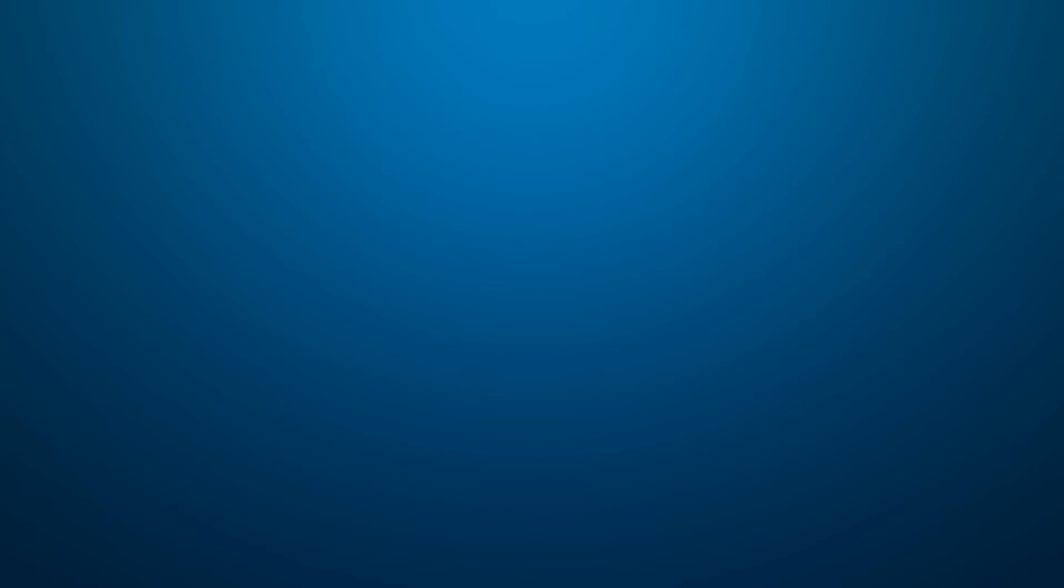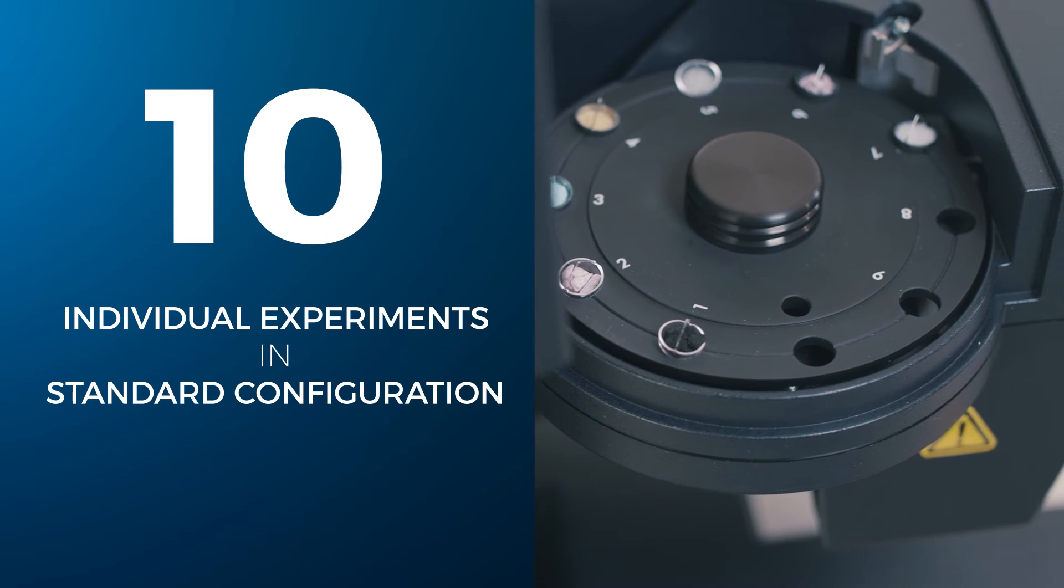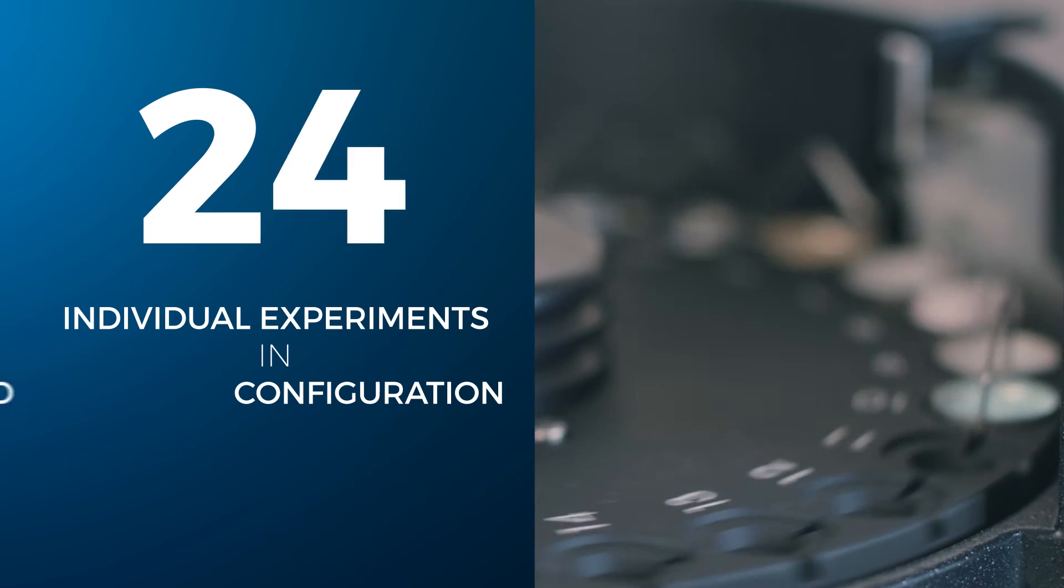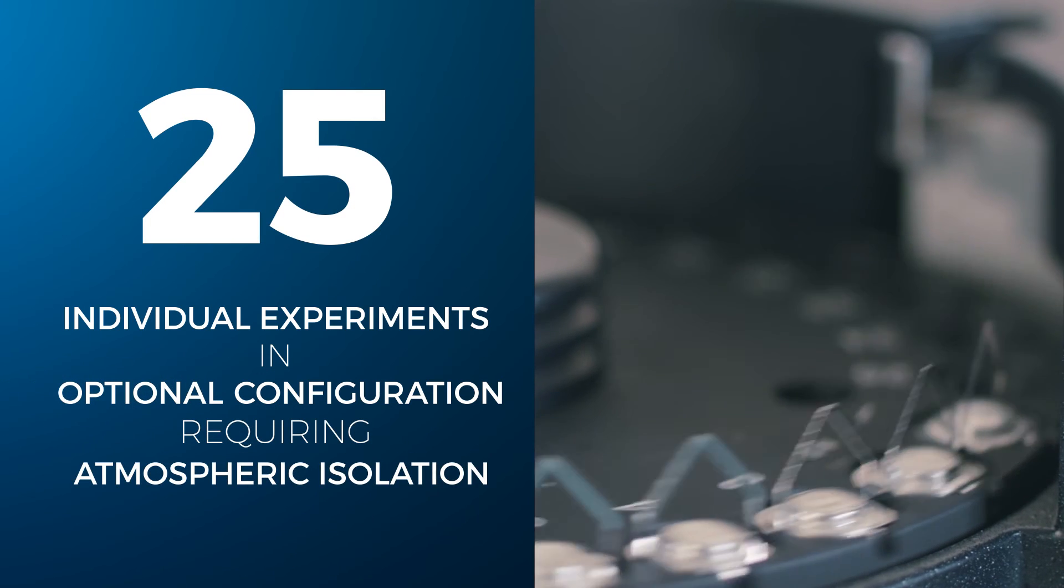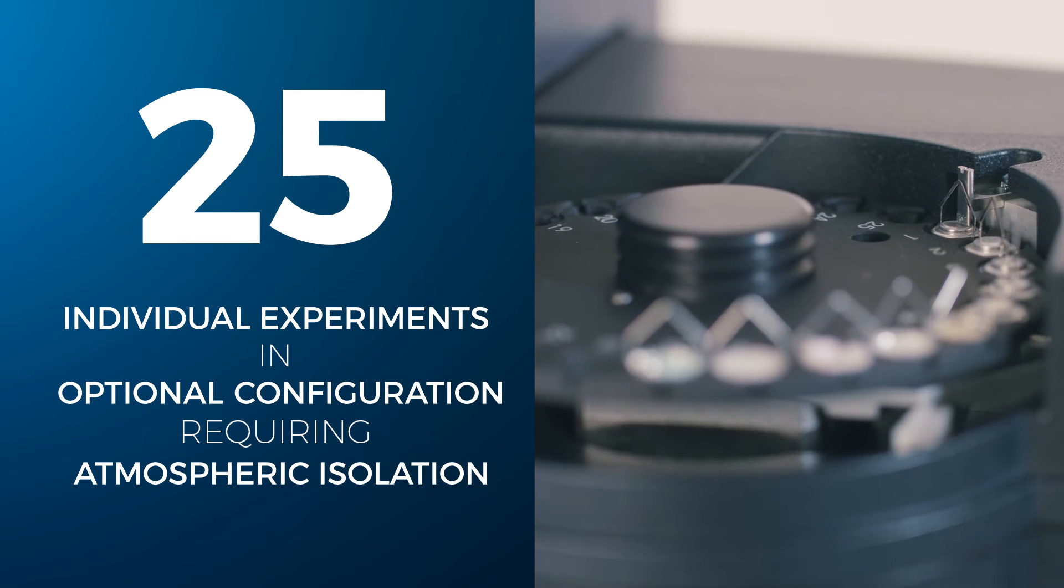The Discovery SA Auto Sampler programs up to 10 individual experiments in its standard configuration. It can be upgraded to a 25 position tray for samples requiring atmospheric isolation, with the availability to punch open the pan just prior to analysis.